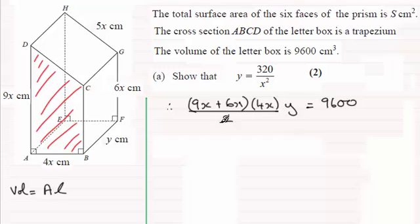I can see that this 2 here will cancel into the 4 twice—that will just save me a bit of time. I think 9x plus 6x is 15x, times it by 2 you got 30x, times it with this x that's 30x squared and the y.